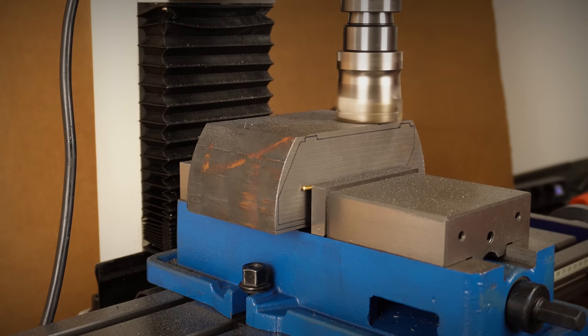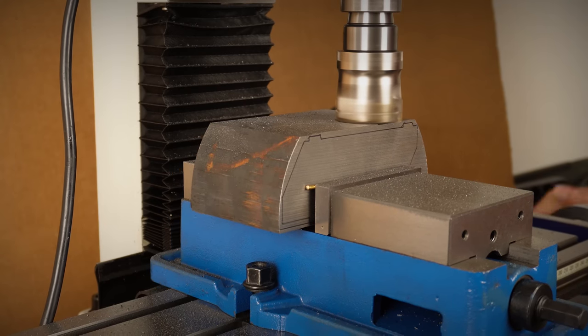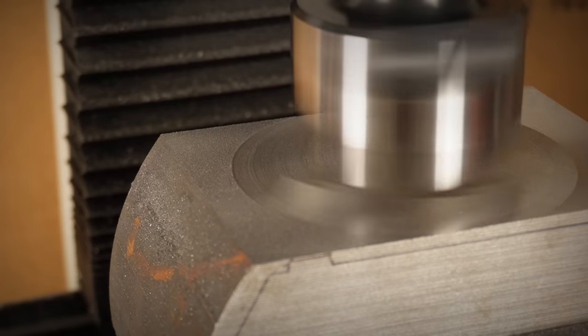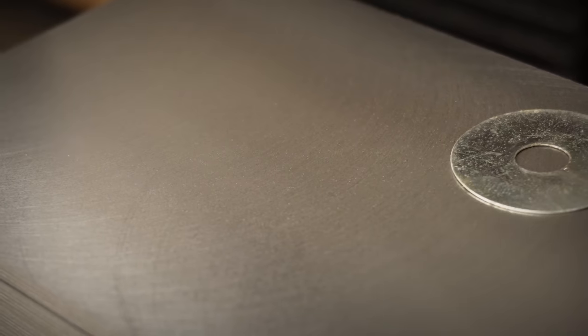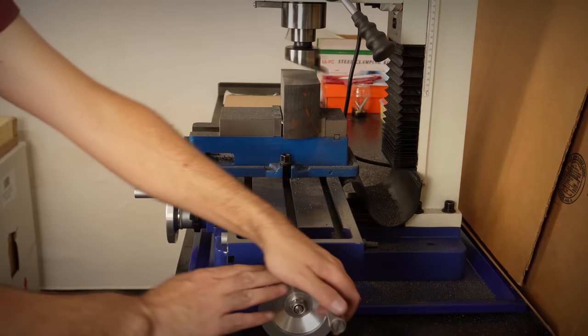Back on the milling machine, we start by squaring our grey cast iron piece of stock. The face mill seems to do a nice job, but a fly cutter leaves a nicer finish, so we'll use that for the final passes.